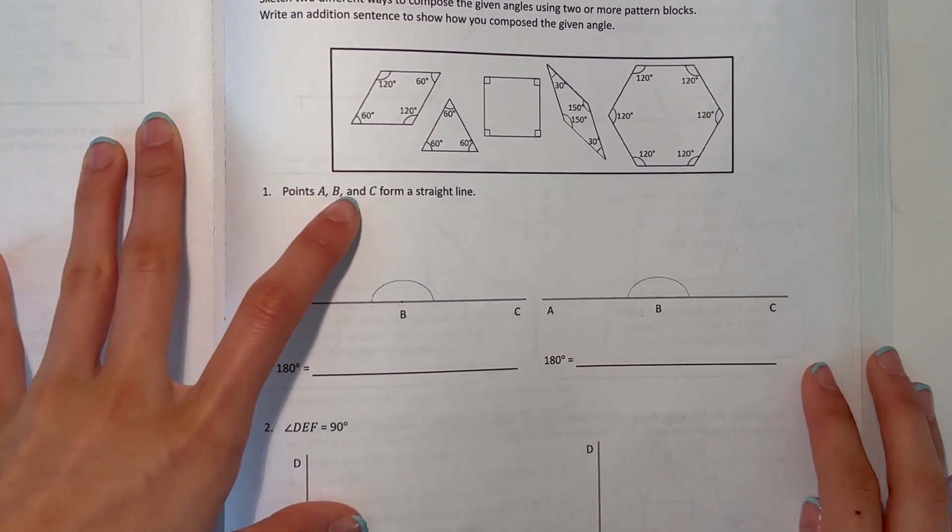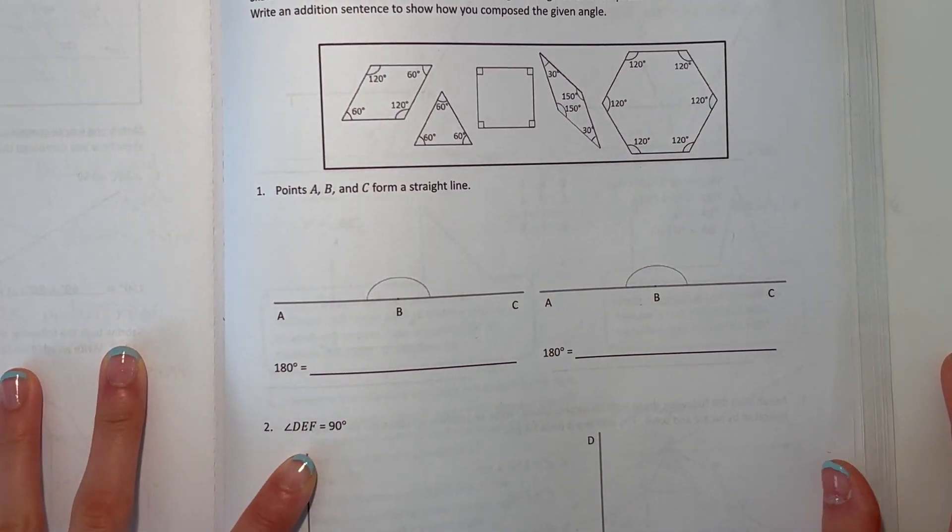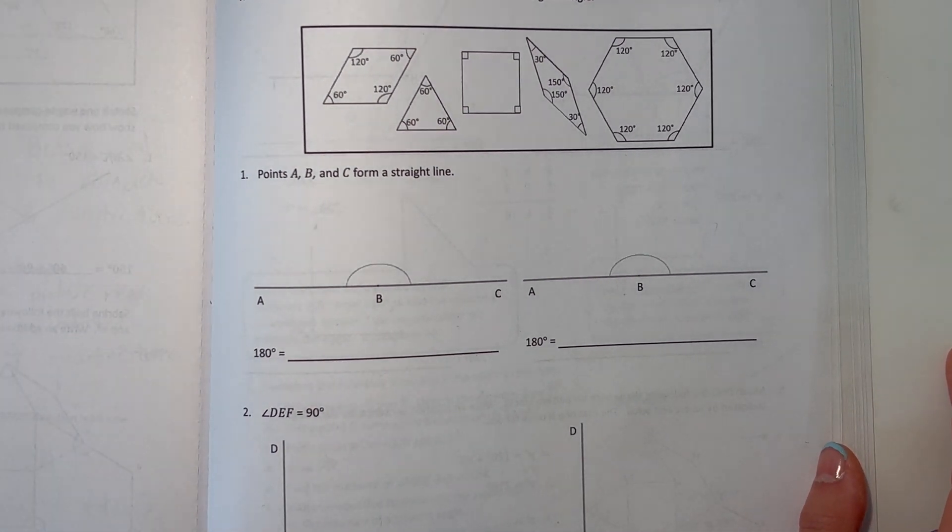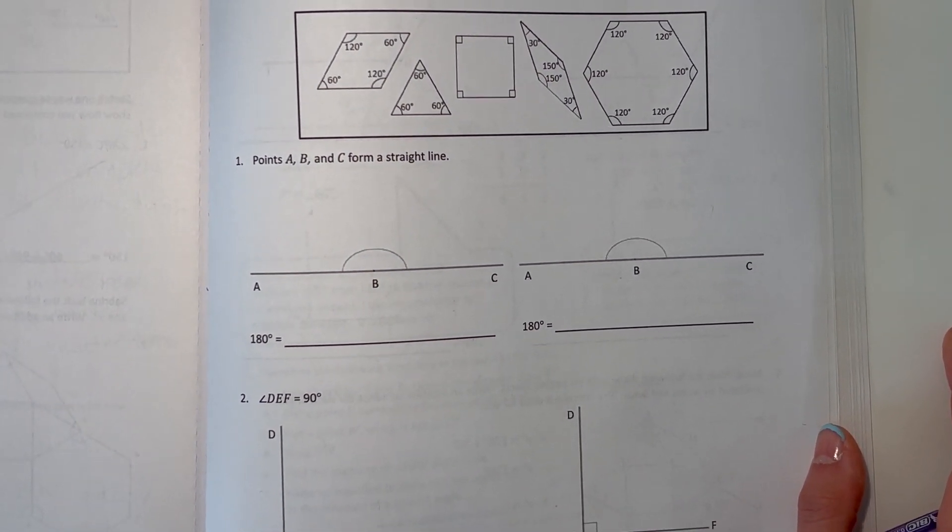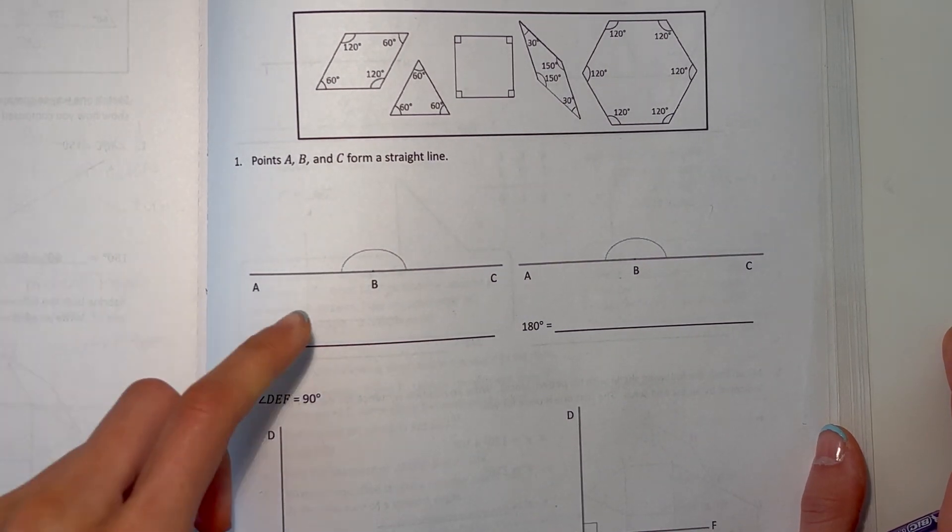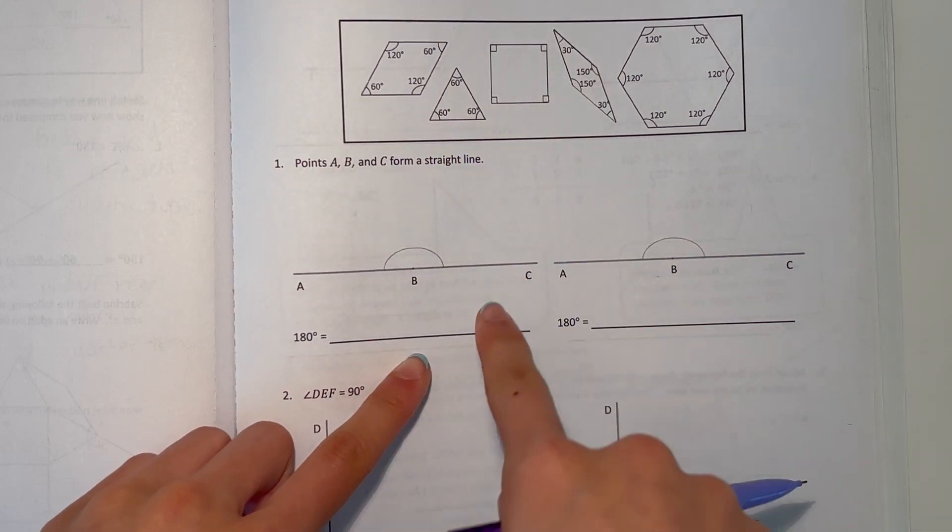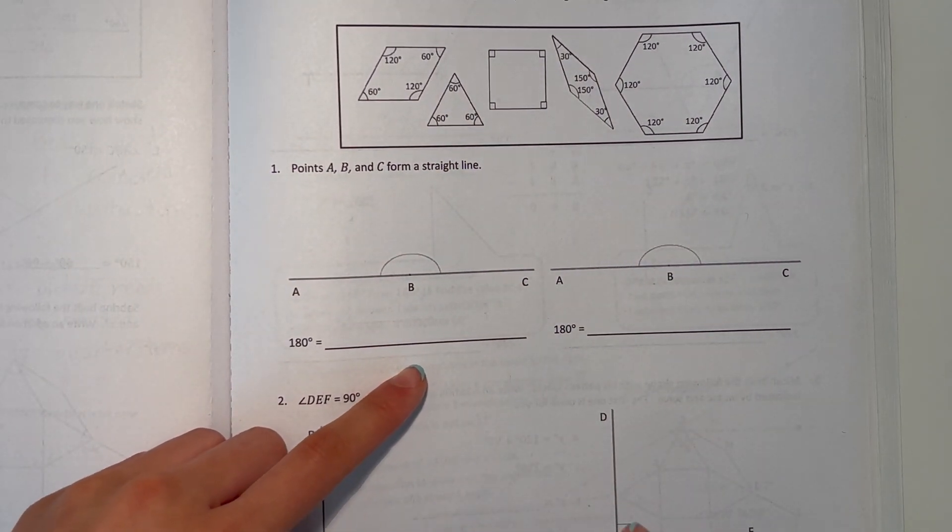Number one, points A, B, and C form a straight line. So what do we know about a straight line? We know a straight line is 180 degrees. So that means the pattern blocks we put in, the angle measures, they all have to add up to 180 degrees.